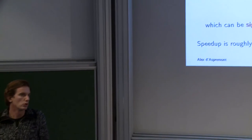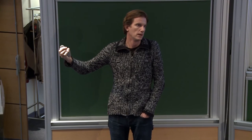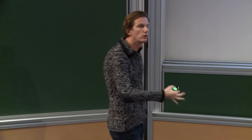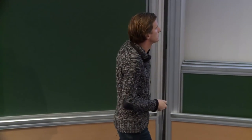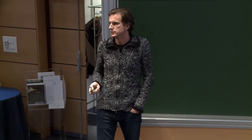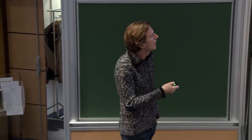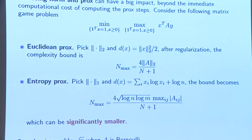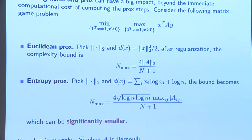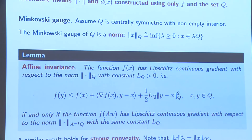I'm using the same algorithm and getting the same dependence on epsilon, however my numerator is changing very significantly. When the matrix A is Bernoulli the difference between these two terms is square root of n. So the method may be optimal in epsilon, but if you don't pay attention to your choice of norm and prox, you can still be a factor of square root of n from the best complexity bound possible. That's a big deal — there's a question of both invariance and optimality.